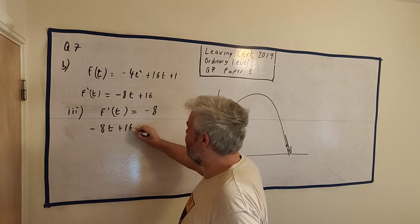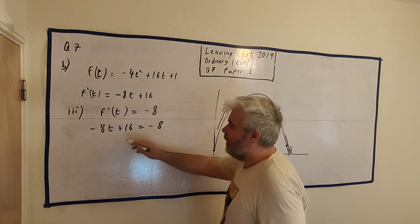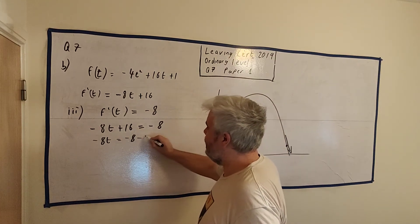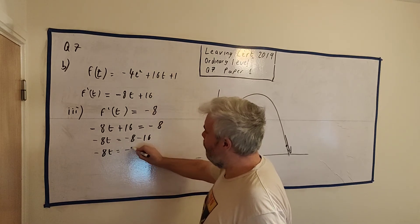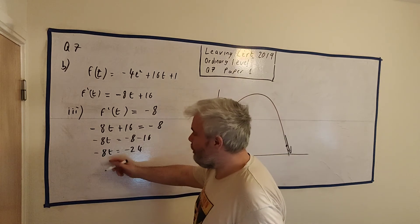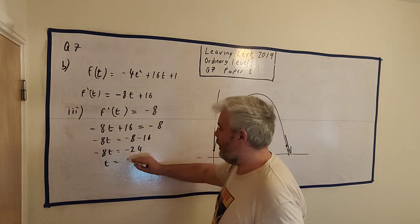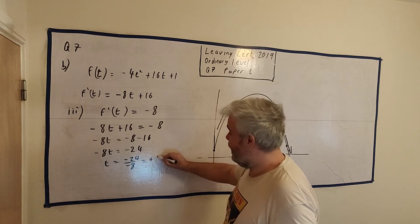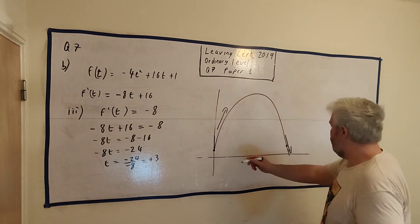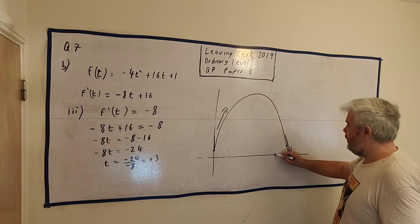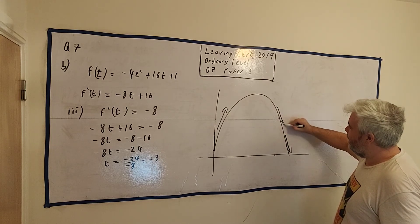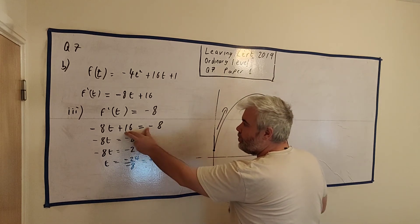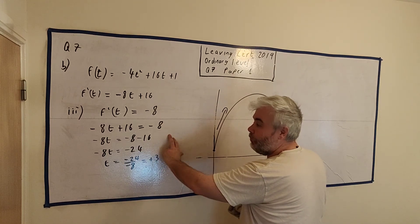We solve: minus 8t plus 16 equals minus 8. So minus 8t equals minus 8 minus 16. That gives minus 8t = minus 24. Divide both sides by minus 8, and we get t = minus 24 divided by minus 8, which is positive 24 divided by 8 = 3. So t equals 3.